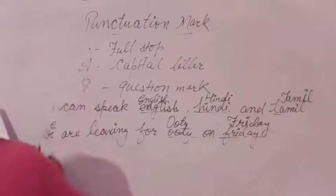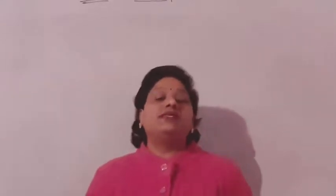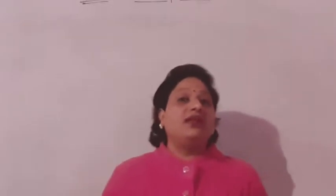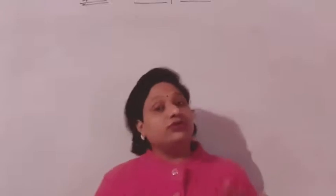Exercise C: Underline the common nouns and circle the proper nouns in the sentences. This topic is about nouns. Noun is the name of a person, place, thing, and animal. Common nouns are general names and proper nouns are special names. A special name refers to a particular person, thing, place, or animal. For the general name of a group, we use a common noun.